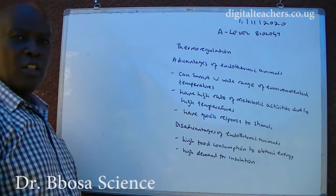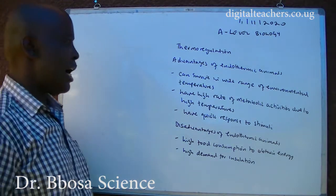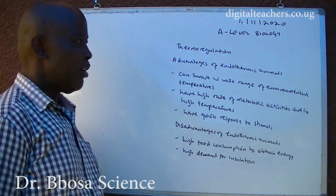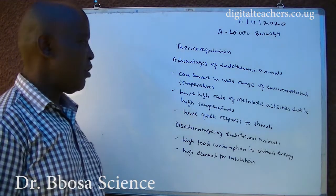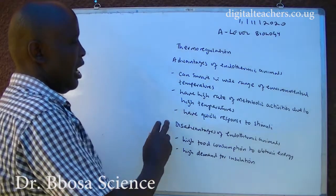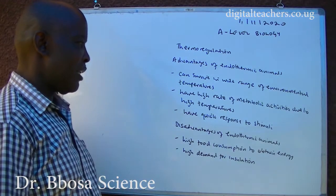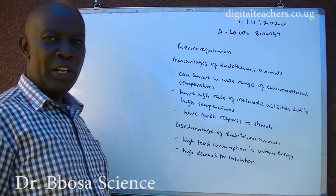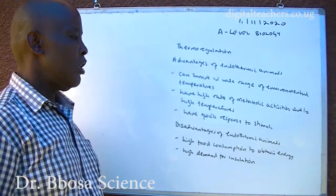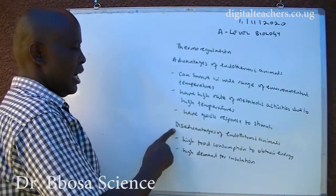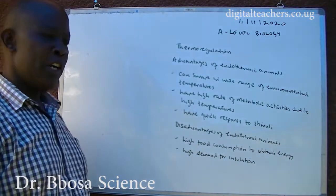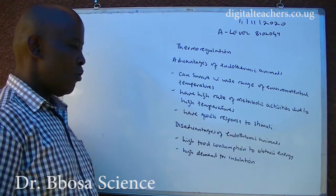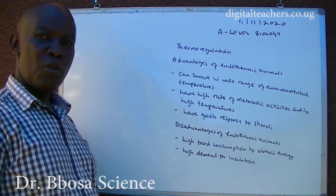Advantages of endothermic animals: they can survive in a wide range of environmental temperatures; they have a high rate of metabolic activities due to high temperatures; and they quickly respond to stimuli. Disadvantages of endothermic animals: they have high food consumption to obtain energy.